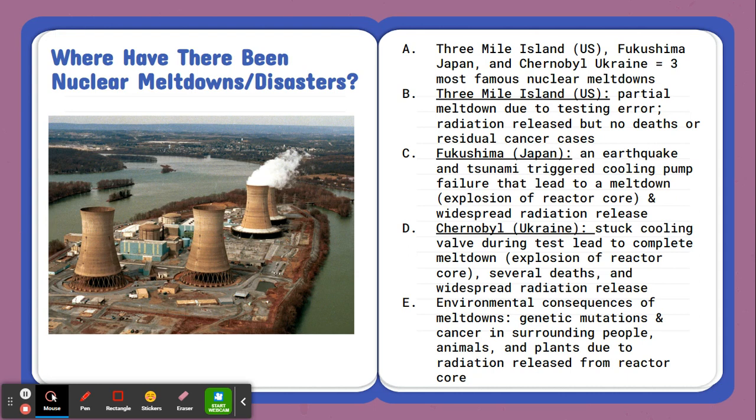In Fukushima, Japan, it was actually due to an earthquake and tsunami that triggered the cooling pump failure that led to the meltdown or explosion of the reactor core in the nuclear power plant, releasing radiation to tremendous areas around Fukushima, Japan.